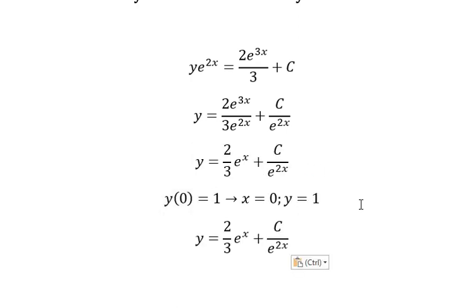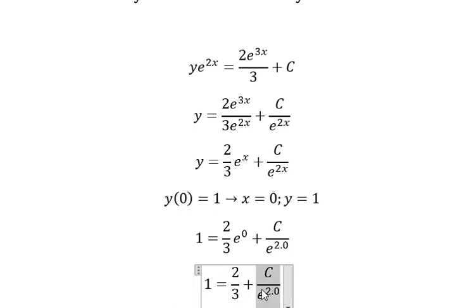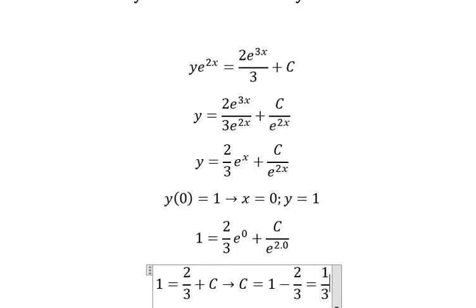We substitute these values to find the constant C. This gives us 2 over 3 plus C equals 1. So C equals 1 minus 2 over 3, which equals 1 over 3.